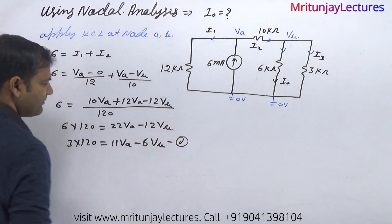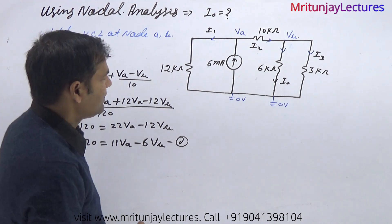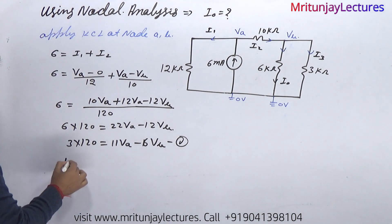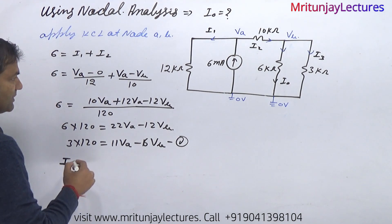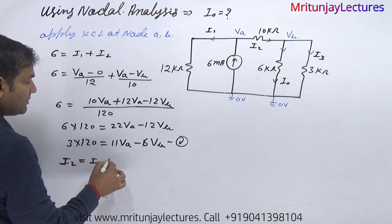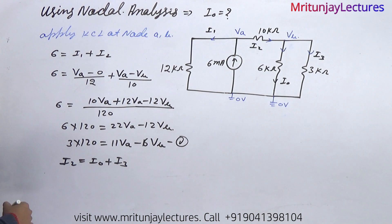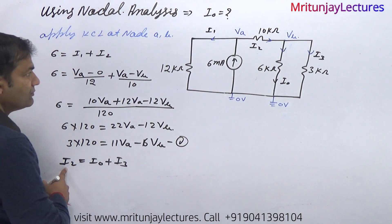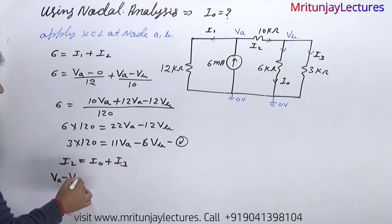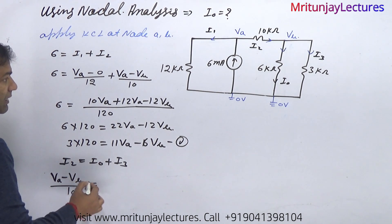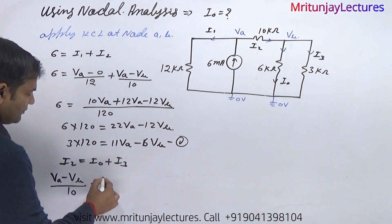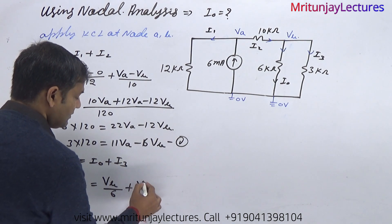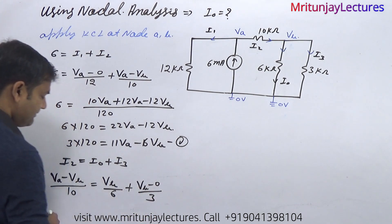Now apply KCL at node B. The incoming current i2 equals i0 plus i3. So i2 is Va minus Vb divided by 10. i0 is written as Vb divided by 6. And i3 is Vb minus 0 divided by 3.